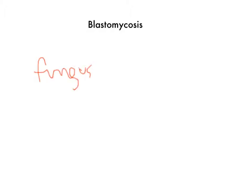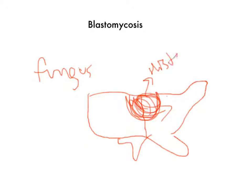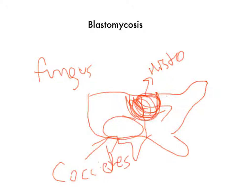and you see it in states — let me draw America here. This is the Mississippi River, so you see it in states east of the Mississippi River, excluding the Ohio River Valley. The Ohio River Valley is where you see histoplasma, and in the southwest near the San Joaquin River Valley, you see coccidioides.